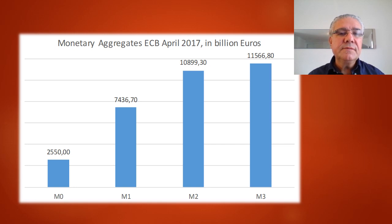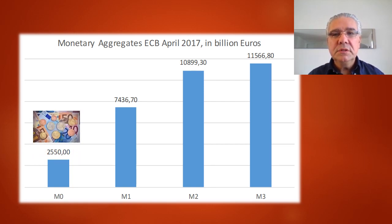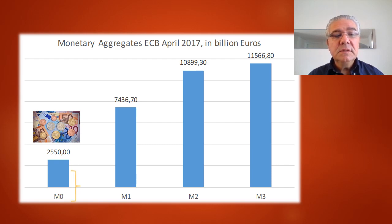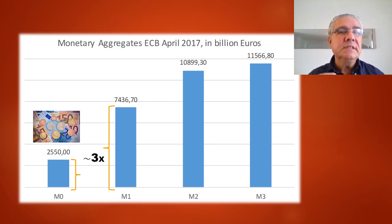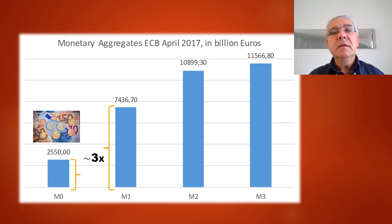If we look at the numbers from the European Central Bank, we find that M0 constitutes a really tiny portion of the monetary aggregates — about 2.5 trillion euros. And this represents about one-third of M1. So M1 is three times bigger than M0, and M1 is constituted mostly by bank accounts that individuals have at their banks.